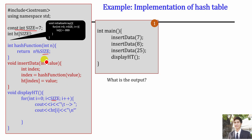We have the hash function, which uses the modulo operation with the size of the array. This function returns the index of the element that should be inserted into the hash table. We can also create another function called insertData that takes a value we want to insert. This function is straightforward — it calls the hash function, which returns an index, and then we access the array through that index and assign the value into it.